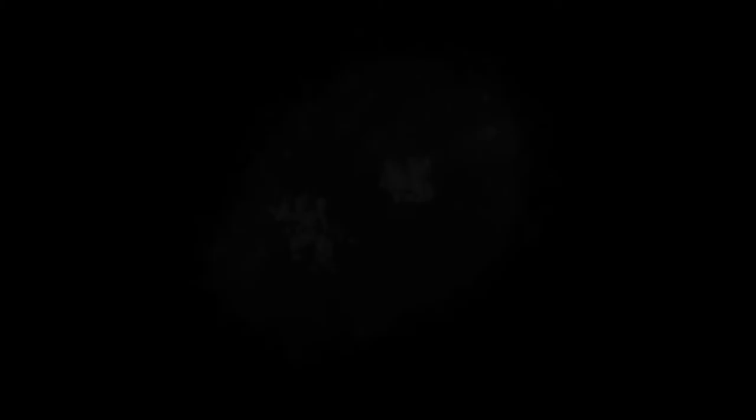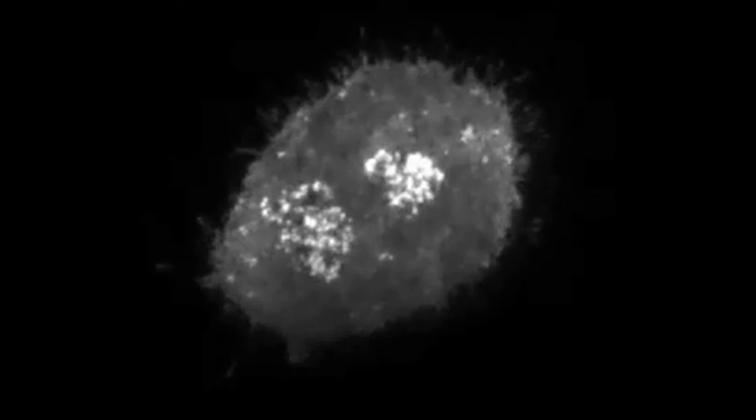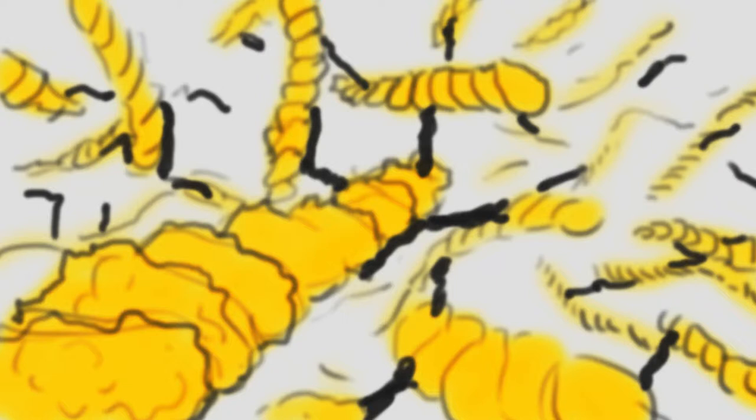Actin fibers are the toothpicks. They are semi-flexible polymers assembled from globular actin and distributed throughout the cytoplasm and cortex. There are three types of special glues joining the actin fibers together into a network. In the polar regions and cortex, global cross-linkers act as the glue and help push the poles apart, expanding the cell.